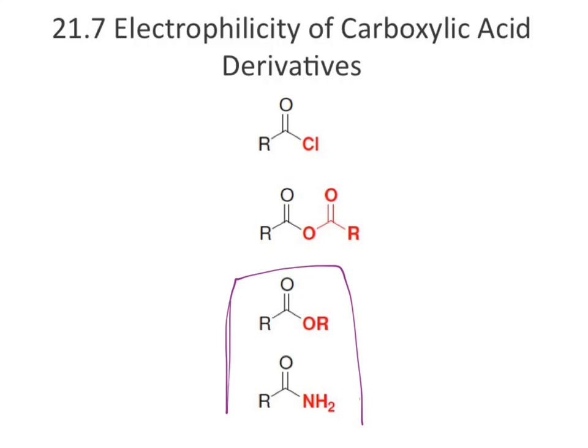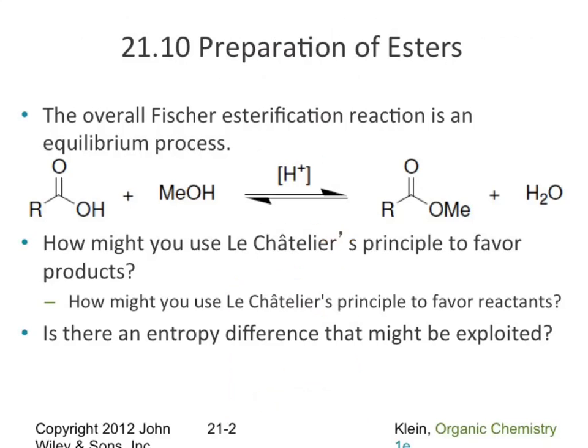To get these reactions to actually generate products — your ester or amide — we have to take advantage of concentration gradients and try to push the reaction one way or the other. The overall reaction is highly equilibrium-based; it goes both backwards and forwards. We don't see a huge favoring for the ester in general — it's favored ever so slightly, but not by much.